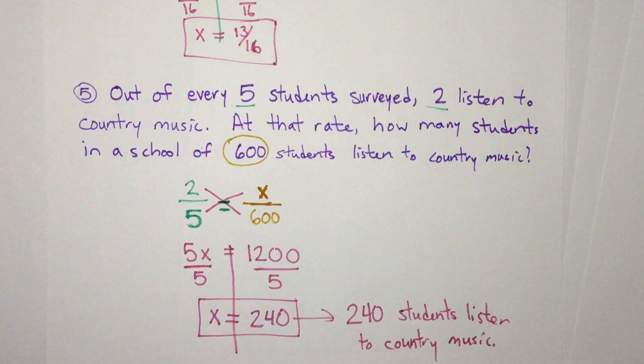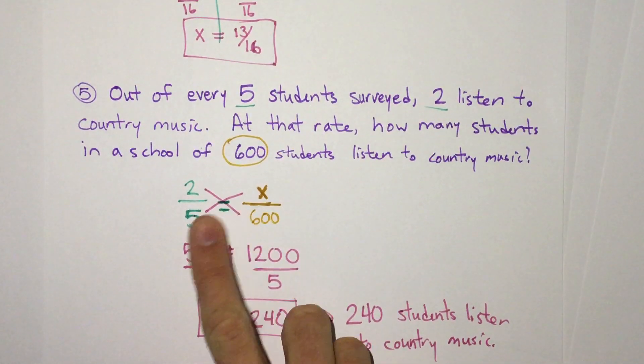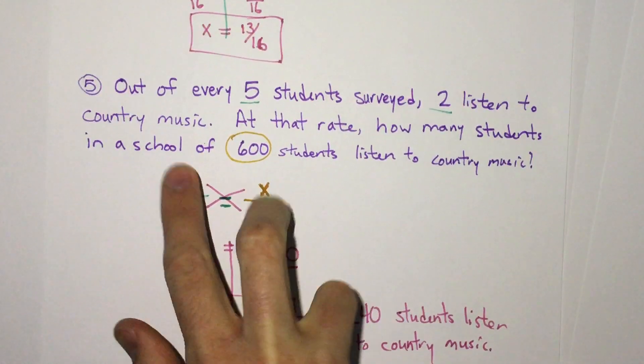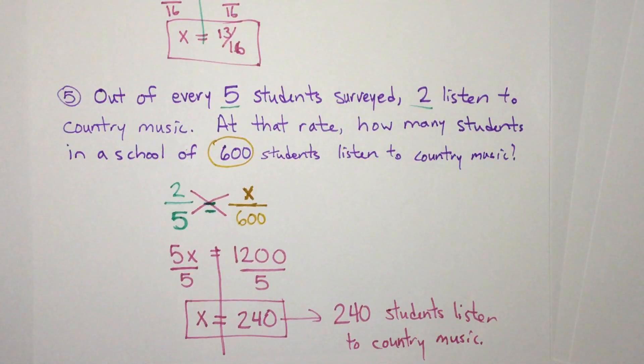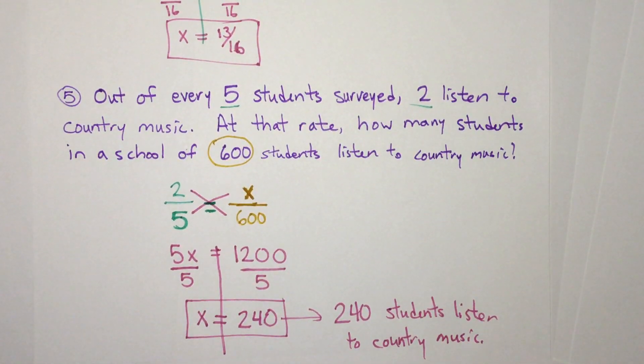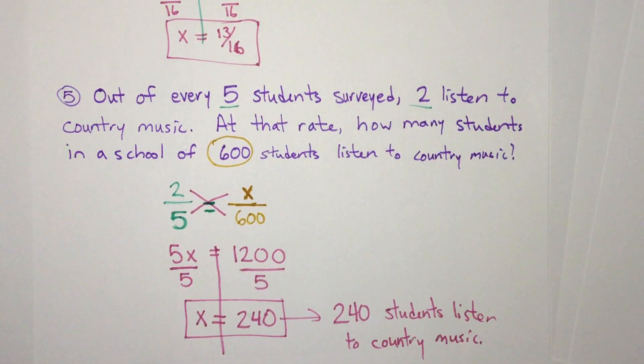So for all equal fractions, equal proportions, think about multiplying the diagonals or cross multiply, and then solving the equation. So you can move on to the practice assignment to practice proportions. And then once you complete that, then you can move on to the assessment.